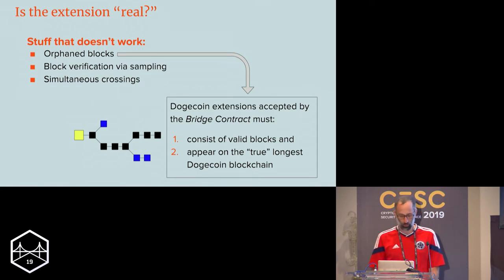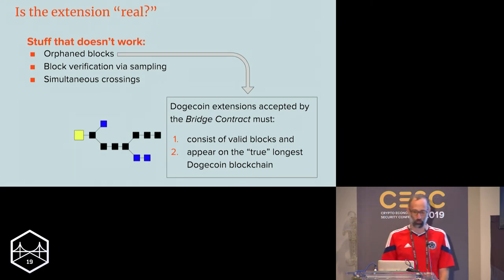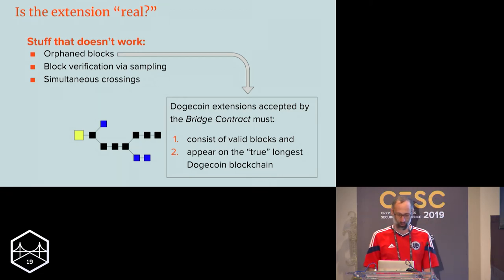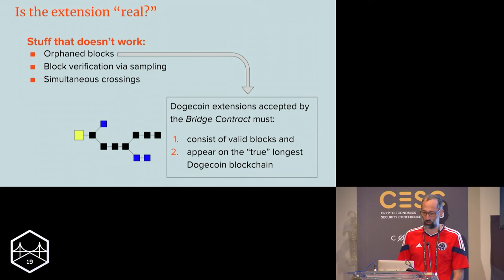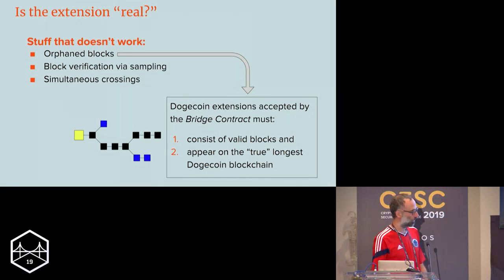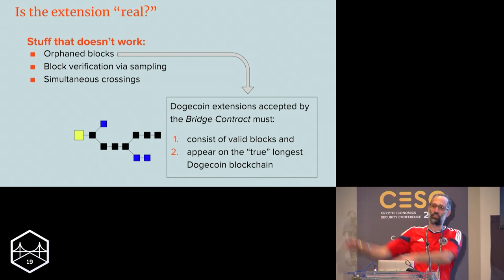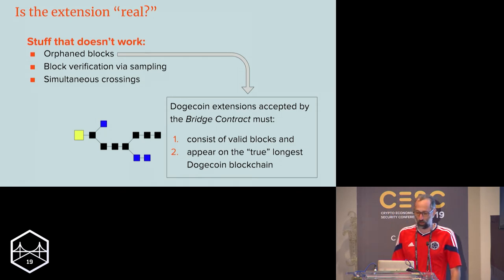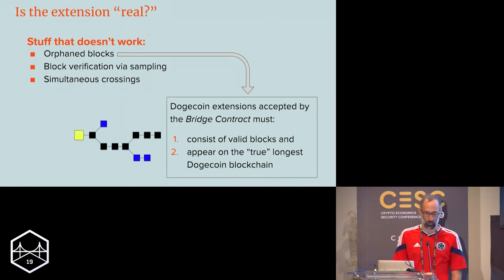Some things that don't work: orphan blocks — nobody should be sending orphan blocks to the bridge contract, and we have to deal with that. Block verification via sampling is also hopeless — if you're taking a bunch of Dogecoin blocks into Ethereum, it's a bad idea to just sample them and say that if a couple were valid then the whole chain is probably valid, because the adversary can hide one bad block anywhere in that chain.